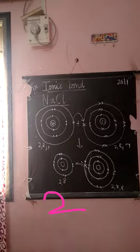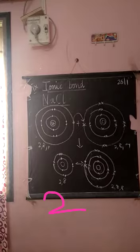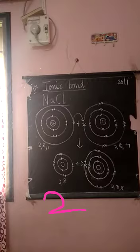I want to remind you one thing that I told you about the octet rule. What is the octet rule? That is, all atoms are trying to get a stable electronic configuration like noble gases — that is, they want to get 8 electrons in the valence shell.